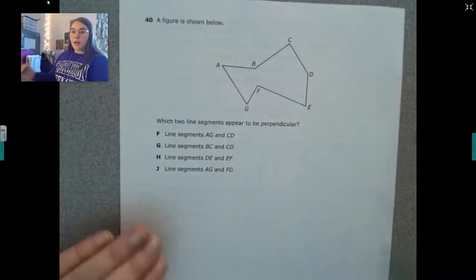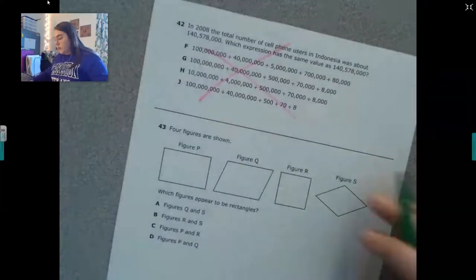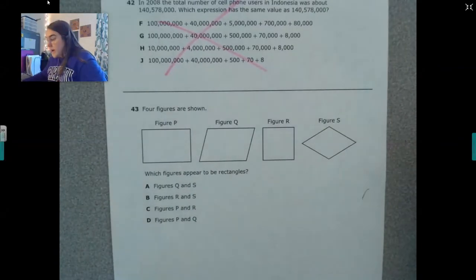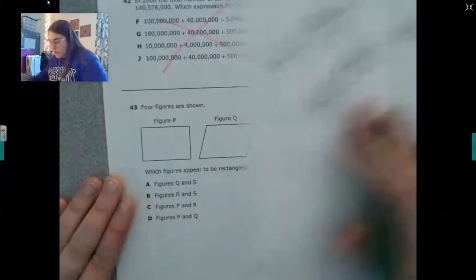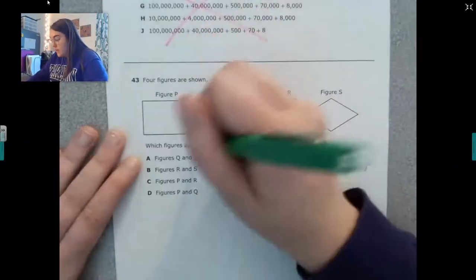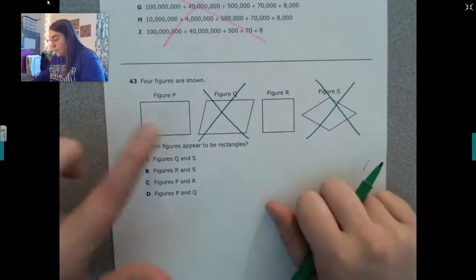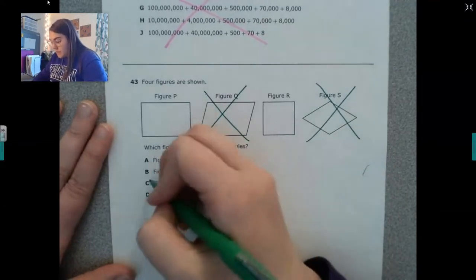All right, let's look at this one. Oh, we're not on perpendicular yet. Not that one. Only one more. Four figures are shown below. Which figures appear to be rectangles? Now guys, the only classification for rectangles is four right angles. So we can rule out the ones that do not have right angles. This one doesn't have four right angles. And this one doesn't have four right angles. So I only am left with figure P and figure R. So which one am I going to pick? C. Figure P and R.